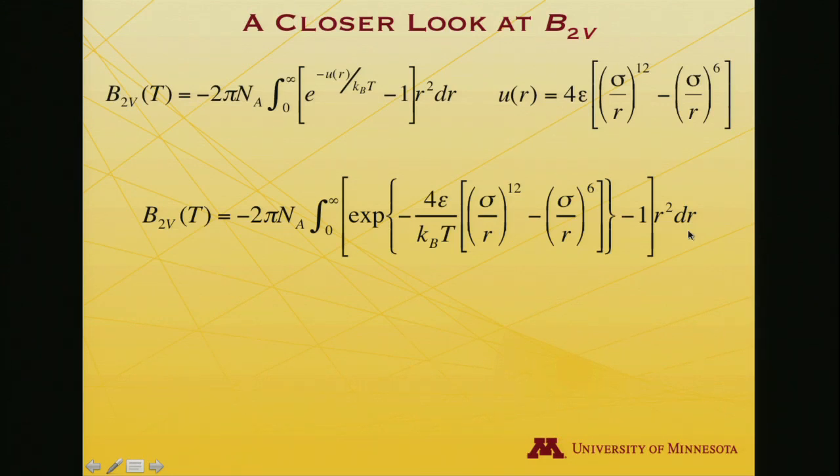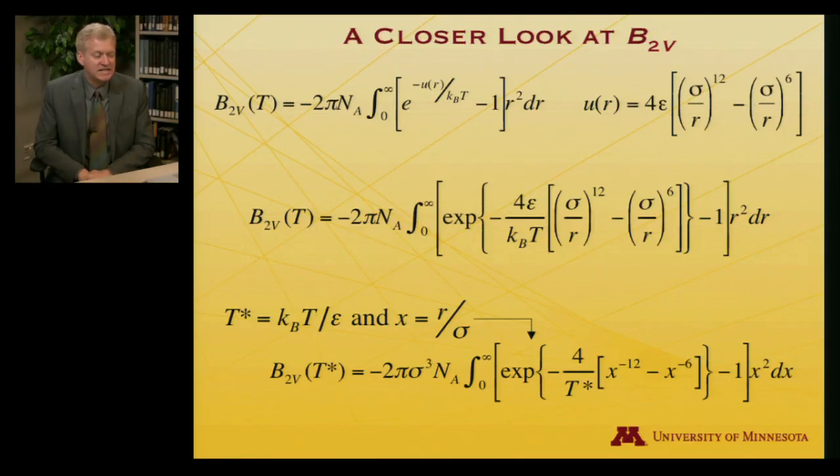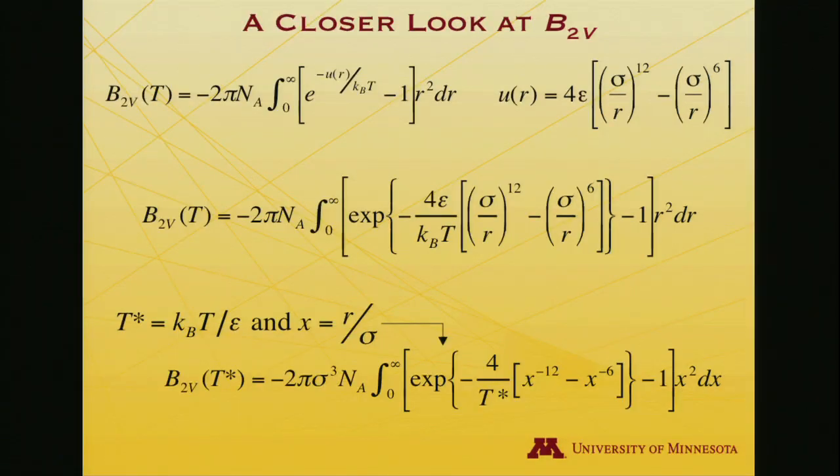That's an imposing looking equation. It's got a whole lot of Greek letters and other letters. Let's simplify it a little bit. In particular, let me define T star. T star is going to be Boltzmann's constant times temperature divided by epsilon. This is a little bit like a reduced unit, because I've divided by something that's specific to a given gas. Every gas has its own epsilon. So I'm going to take temperature and transform it to T star in a substance-sensitive way. From a substitution standpoint, that means this ε over kᵦT just becomes 1 over T star.